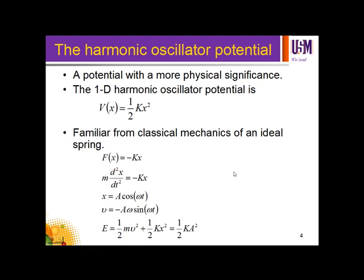Let us look at the one-dimensional harmonic oscillator potential. If you remember in classical mechanics, we have the potential energy equal to half kx squared. This comes from classical mechanics of an ideal spring — we have the restoring force for a spring equal to negative kx, where k is the spring constant.